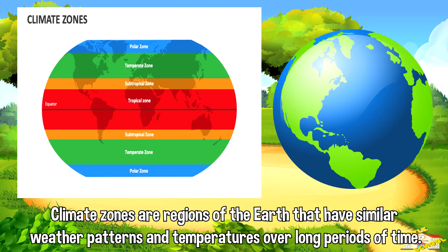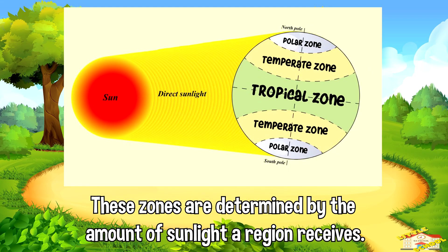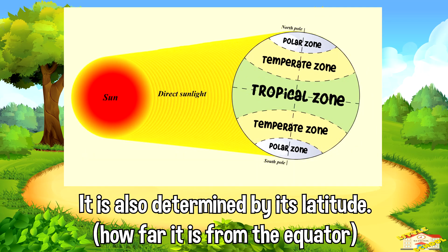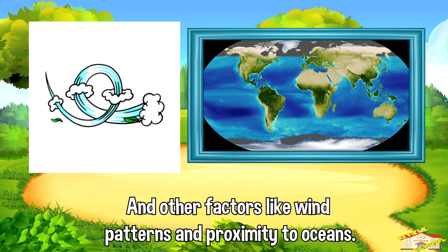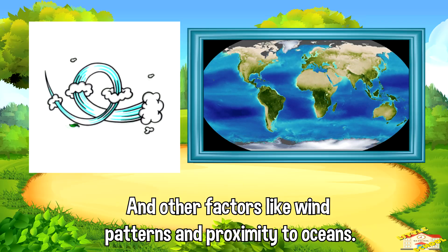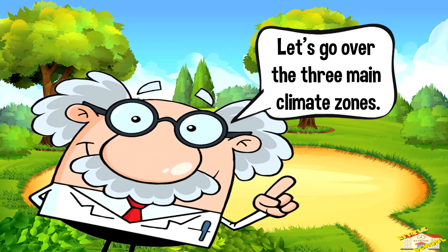Climate zones are regions of the earth that have similar weather patterns and temperatures over long periods of time. These zones are determined by the amount of sunlight a region receives, its latitude or how far it is from the equator, and other factors like wind patterns and proximity to oceans.